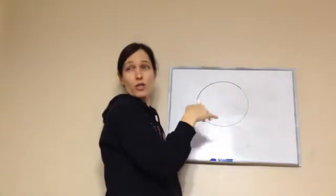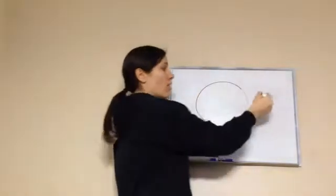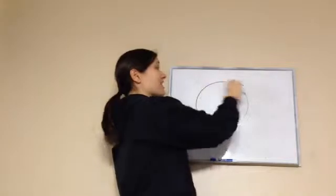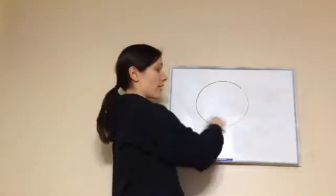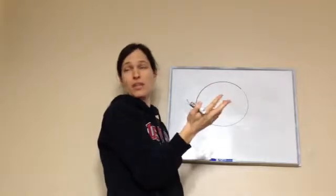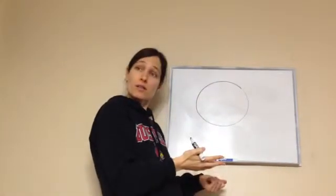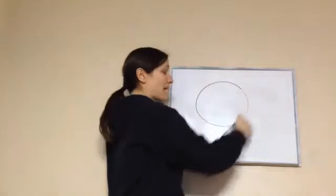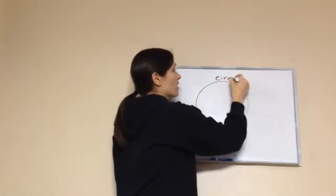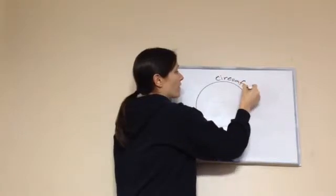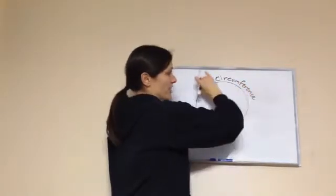Now why is this not a polygon? Because polygons all have straight edges. So this is a circle, so they don't call the distance around a circle the perimeter. They use a different name because perimeter is for polygons. So the name of the distance around a circle is circumference.